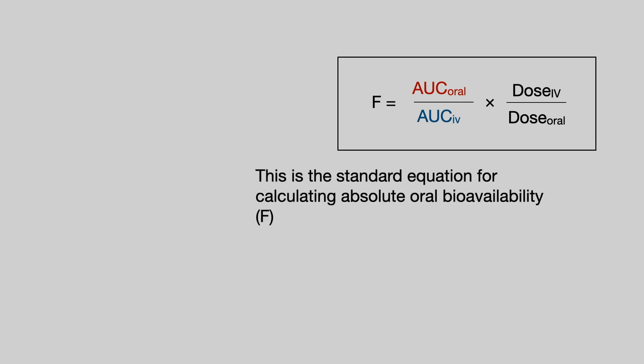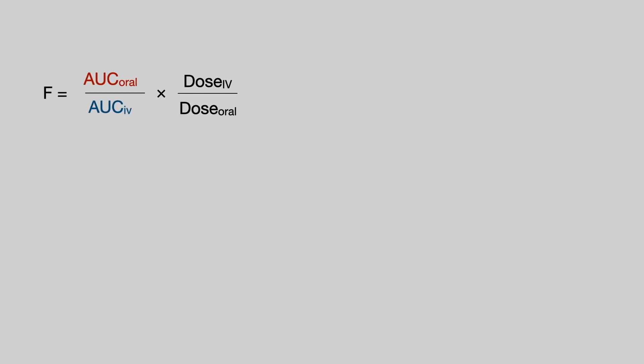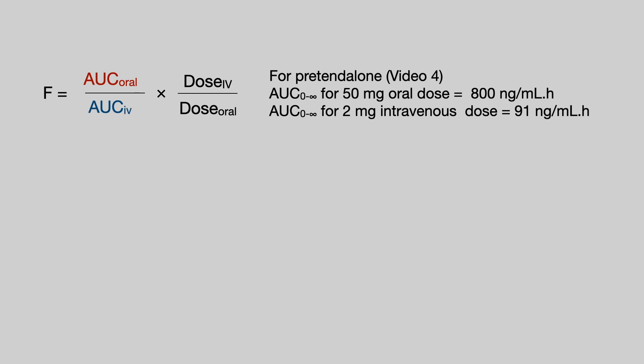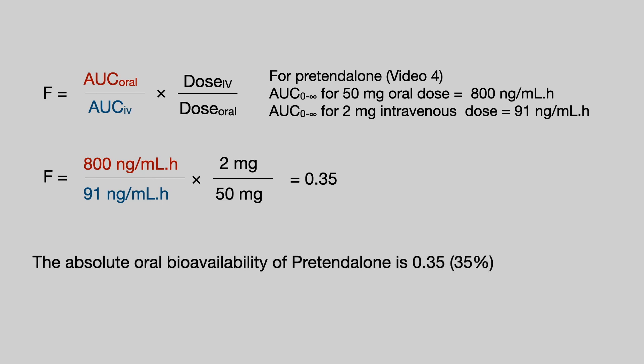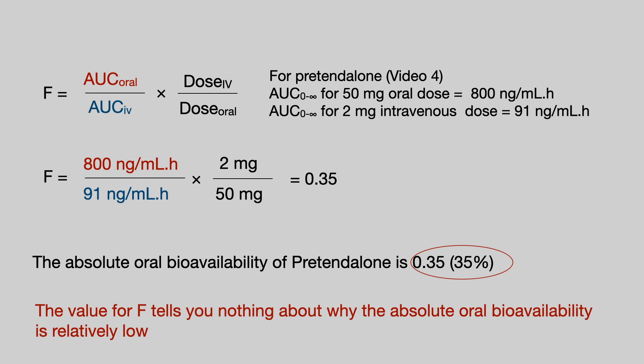Let's calculate it for Pretendalone. We know from video 4 that the AUC for a 50 mg oral dose was 800 ng/mL·hours, and the AUC for a 2 mg intravenous dose was 91 ng/mL·hours. Popping those into the equation, we end up with an F of 0.35. So the absolute oral bioavailability of Pretendalone is 0.35, or 35%. The value of F doesn't tell us anything about why the absolute oral bioavailability is relatively low — it just tells us that it is.